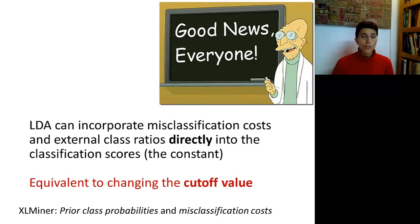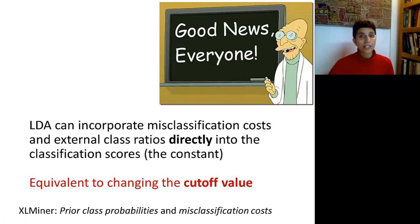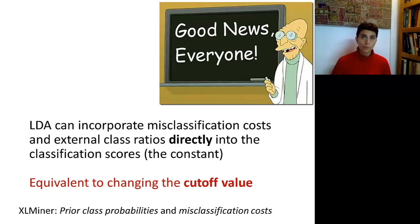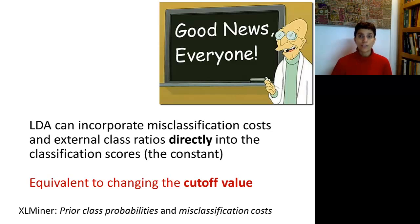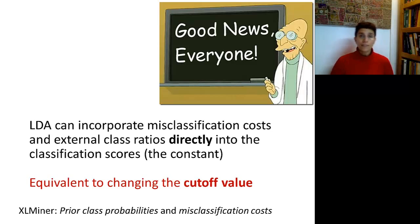With discriminant analysis, we don't necessarily need to use that general method, because we can directly incorporate both misclassification costs and external class ratios into the classification scores. Remember that we use these classification scores to generate a classification for new records. The way we do this is by modifying the constant — the classification scores have a constant as well as coefficients for each predictor. We can also think of this conceptually as changing the cutoff from the classic 0.5 to a different value that accounts for misclassification costs and oversampling. XLMiner allows this through a menu called Prior Class Probabilities and Misclassification Costs.